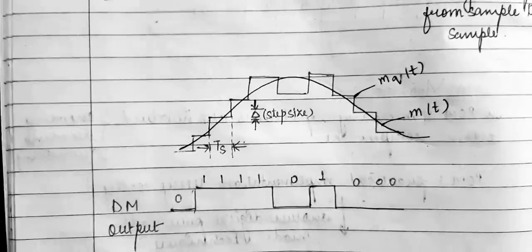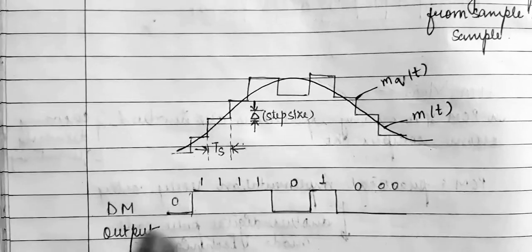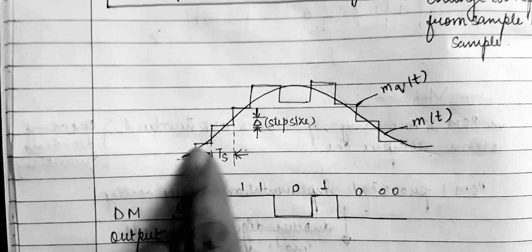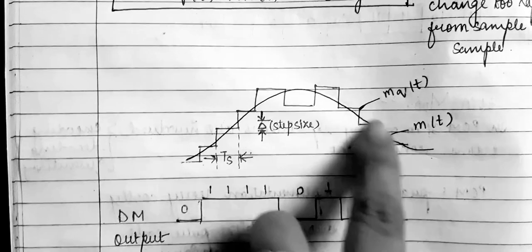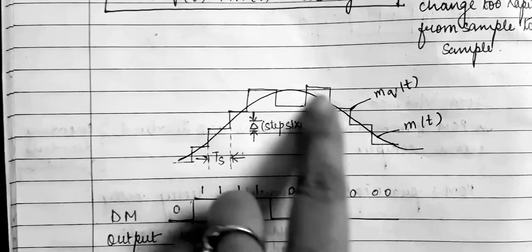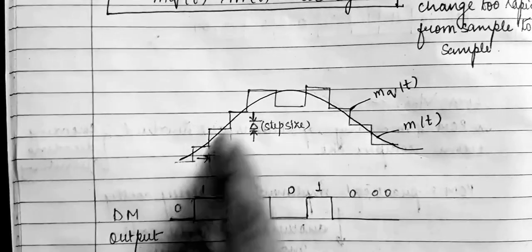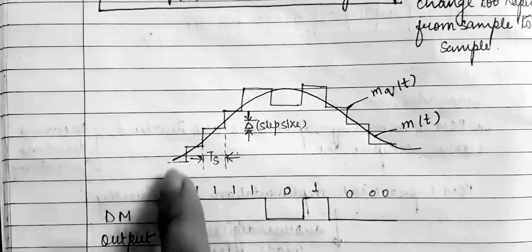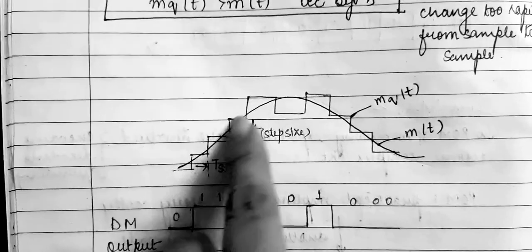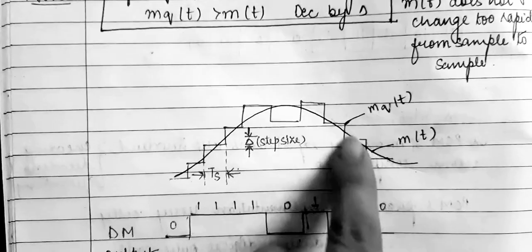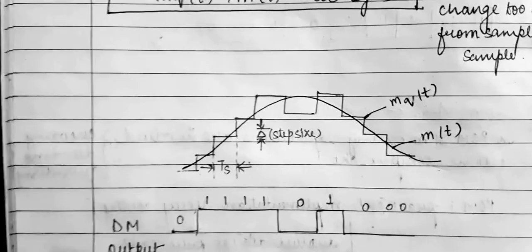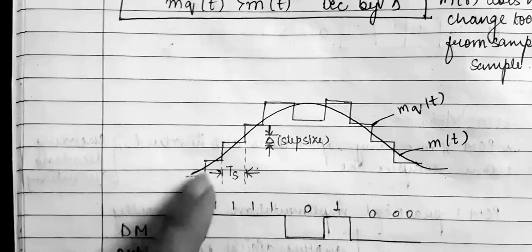Here we can see at the DM output: m(t) is the modulating signal represented by the continuous line, and mq(t) denotes the quantized levels shown by the staircase approximation.